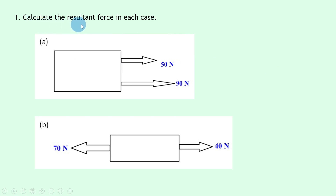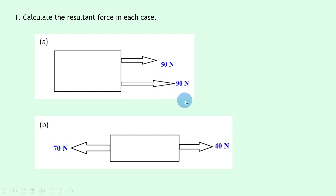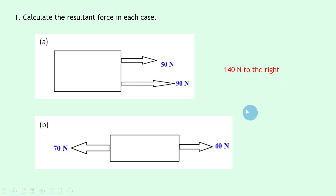Let's get started. Question one says: calculate the resultant force in each case. In part a we have forces in one dimension — we've got 50 newtons to the right and 90 newtons to the right. To find the resultant force we simply add them together, so the resultant force is 90 plus 50 which gives us 140 newtons to the right. Remember we need to define the direction as well.